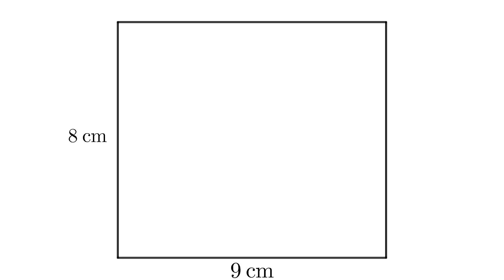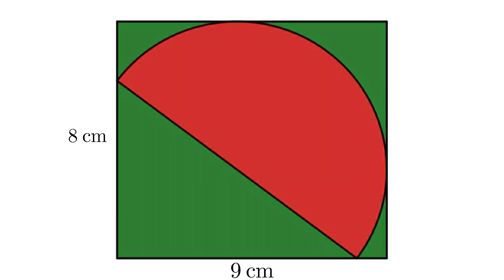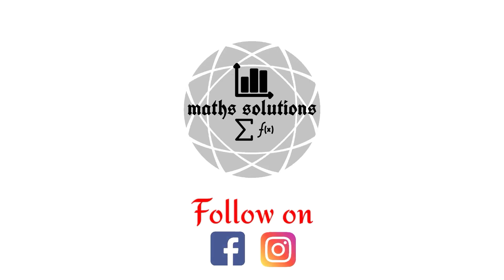Starting with a rectangle with sides 8 and 9 cm, a semicircle is inscribed like this. Then find the relation between the area of the semicircle and the area of the rectangle. Pause the video and try to solve this problem.